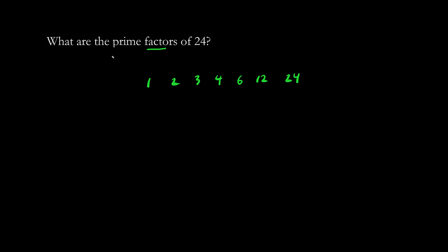Now the word prime means that the number has to be a prime number, which includes 2. 3 is a prime, and these are not prime because we can divide by 2. So the only numbers that are prime factors are 2 and 3.